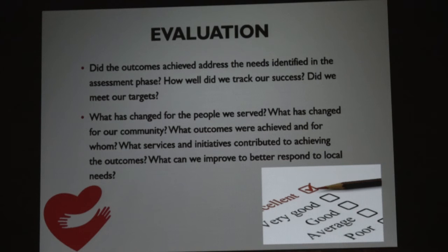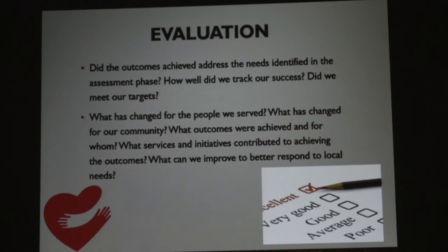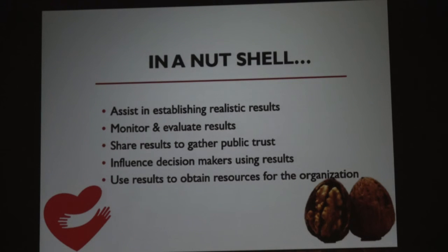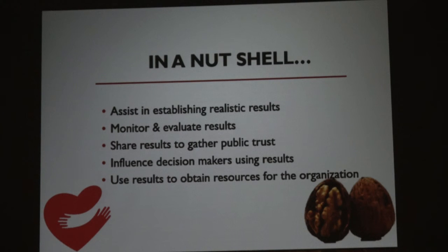In the evaluation phase, we ask: What changed? We gave a food box, enrolled a child in Head Start, did rental and energy assistance, provided transportation. What is the outcome? What was achieved? What can we do to improve? Everything is always about continuous improvement. In summary, the board's roles and responsibilities are to assist in establishing realistic results, to monitor and evaluate those results, to share the results, to gather public trust, to be a champion for the agency to influence decision makers using these results, and to use the results to obtain resources.